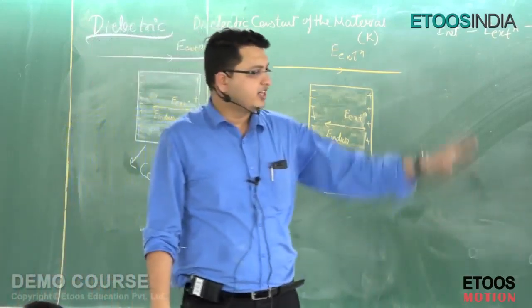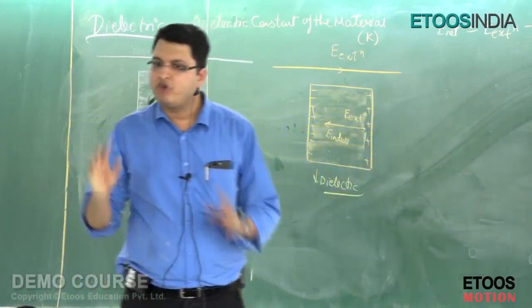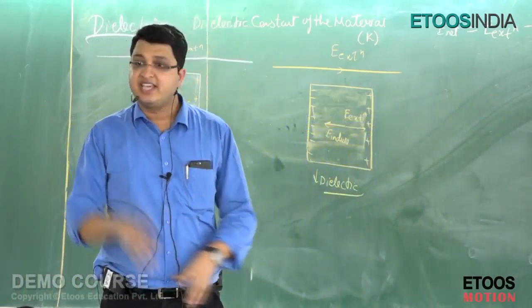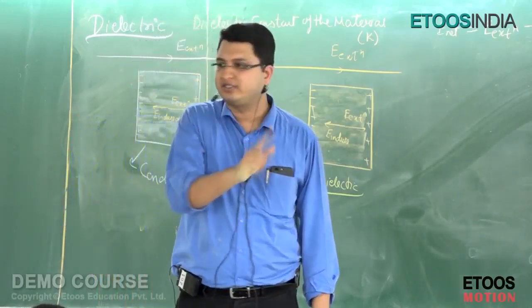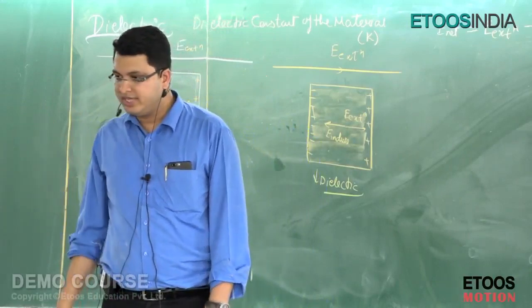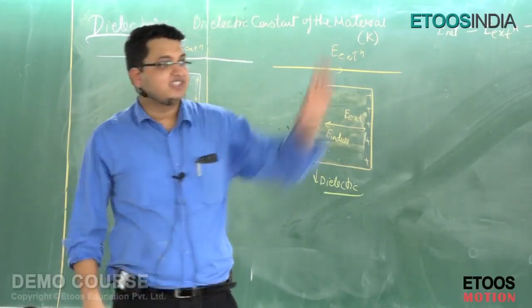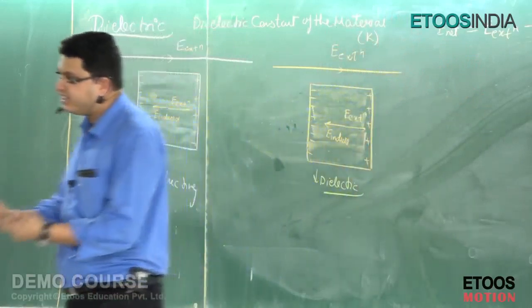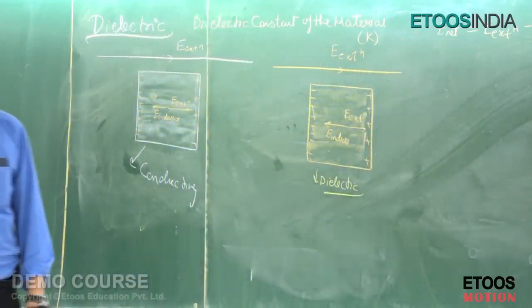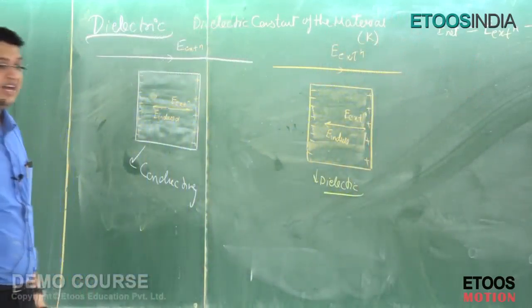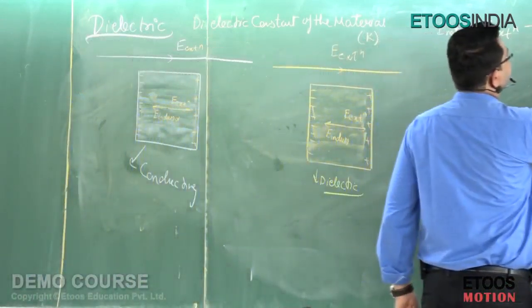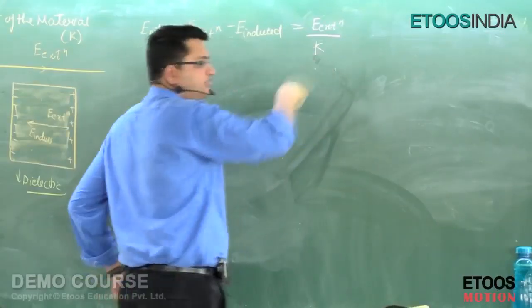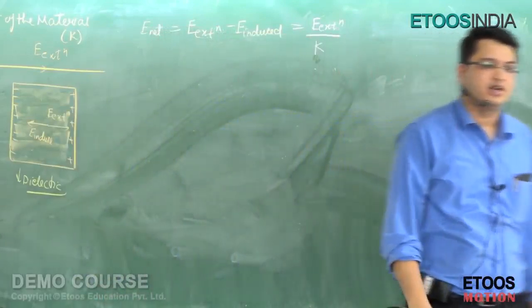Suppose someone tells you the dielectric constant of this material is five. So what you need to understand is: if I put 100 units of electric field on it, the child's answer is 100 divided by 5, which equals 20. The dielectric constant K is the factor by which the external field is divided. This is a property of the material.